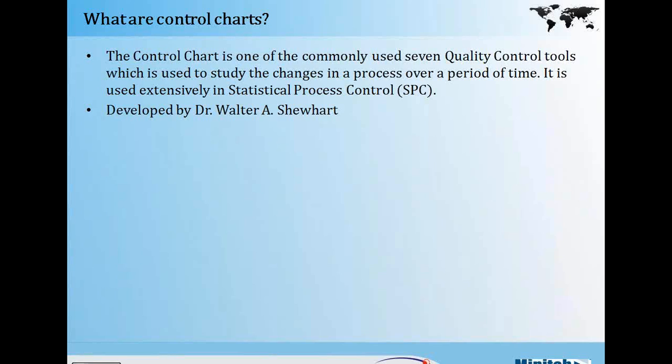What exactly is a control chart? We have all heard about different quality control tools. The commonly used terminology in quality control is the seven quality control tools, which span from cause-and-effect analysis diagrams, check sheets, control charts, run charts, histograms, Pareto analysis, scatter analysis, and so on. Control charts play a very important role in statistical process control, especially for controlling and monitoring process inputs. This was developed by Dr. Walter A. Shewhart way back in the 1920s, further improved, and has been extensively used since the 1950s.